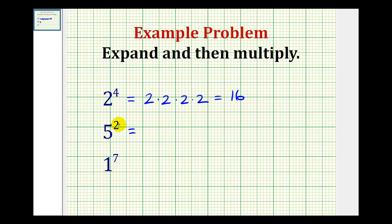Here we have five to the power of two or five squared. So we'll have two factors of five. Five times five equals twenty-five.